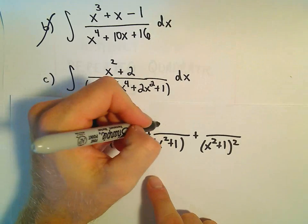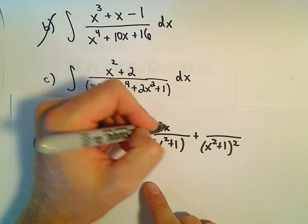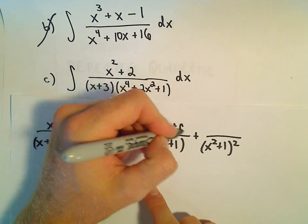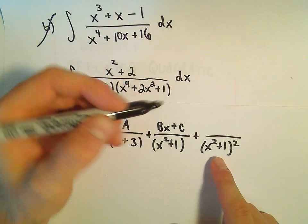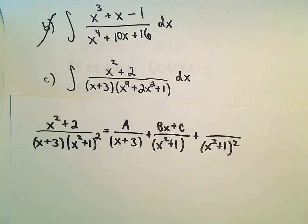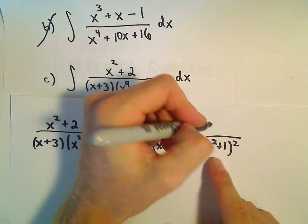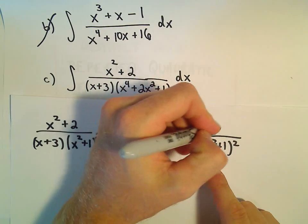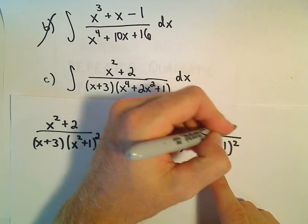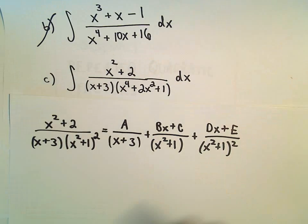In the numerator we'll have a linear term, Bx plus C, and then yet another linear term, Dx plus E.